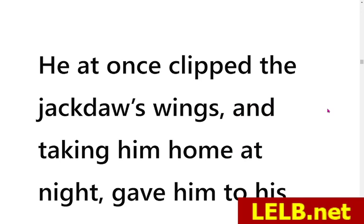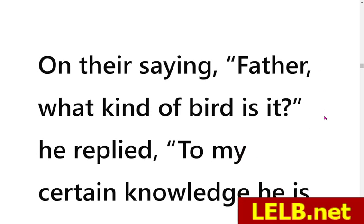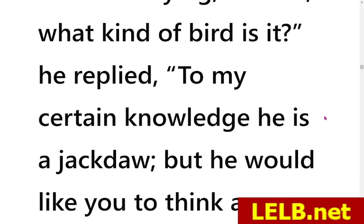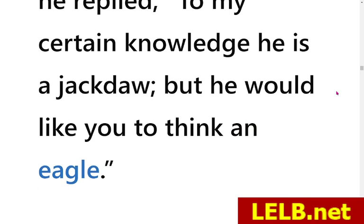The shepherd at once — immediately — clipped the jackdaw's wings. 'Clipped' means cut. Taking him home, he gave him to his children as a kind of gift or souvenir. The children asked, 'Father, what kind of bird is it?' The shepherd replied, 'To my certain knowledge he is a jackdaw — a crow — but he would like you to think him an eagle.' Because the jackdaw was pretending to be an eagle, but did not have the strength, speed, or capabilities that the eagle had.